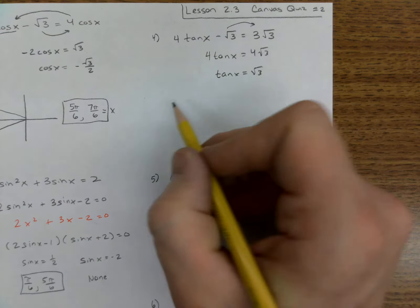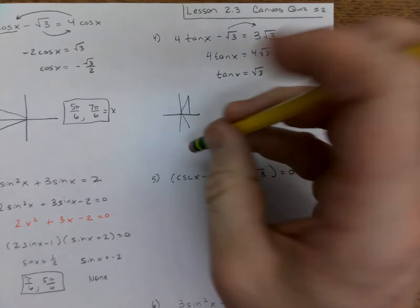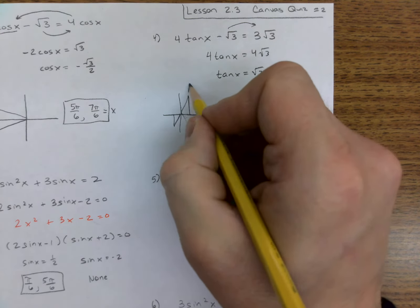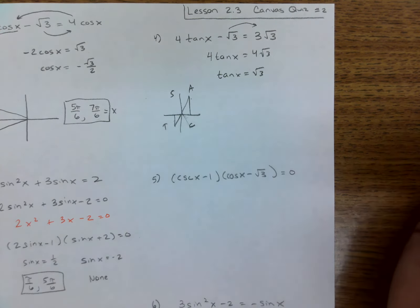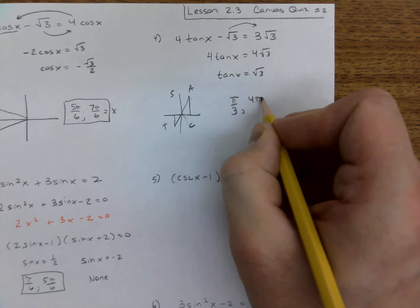And where is tangent root 3? Well, that's the tall triangle. Whoops, not that one. It's going to be down in this quadrant because all students take calculus. These two quadrants: π over 3 and the other one's 4π over 3.